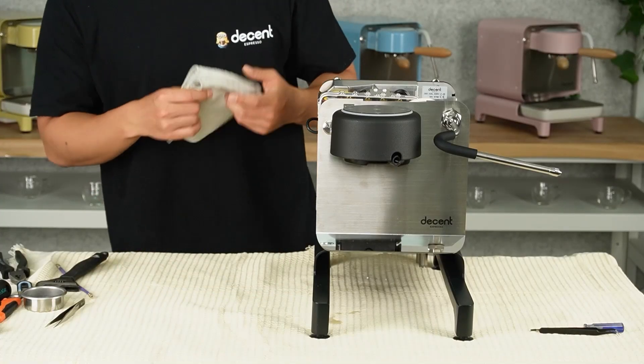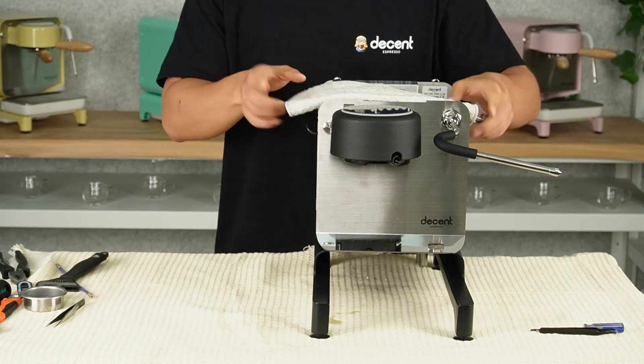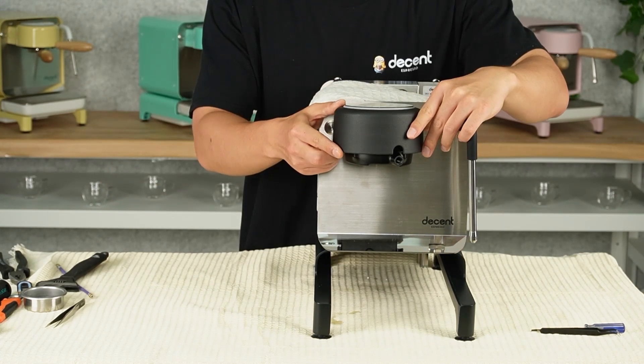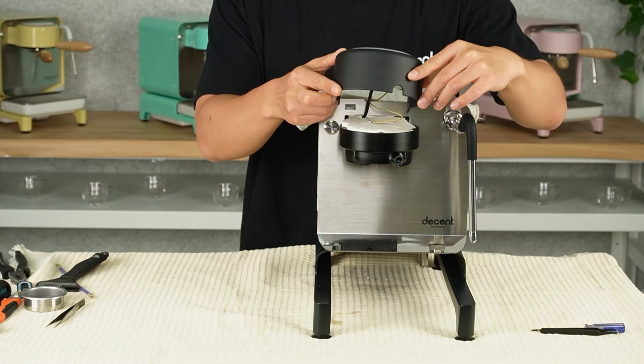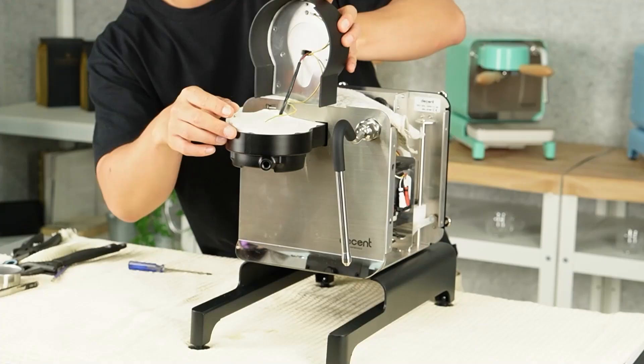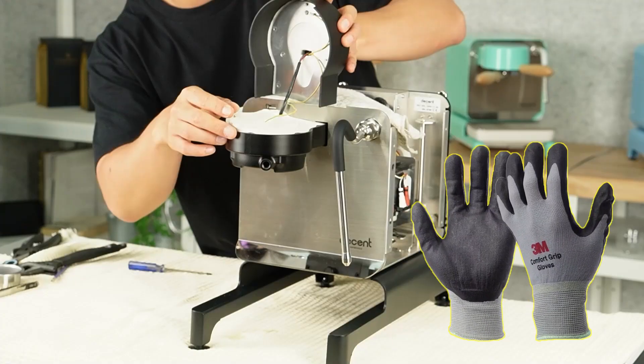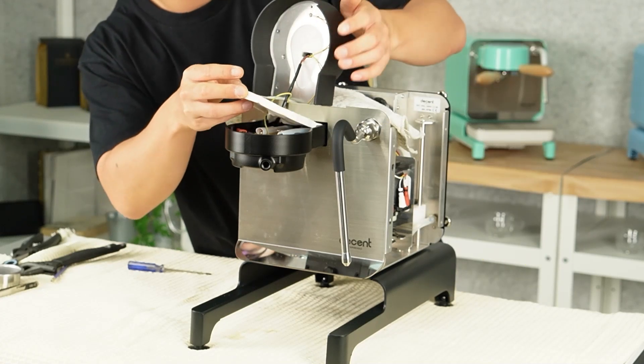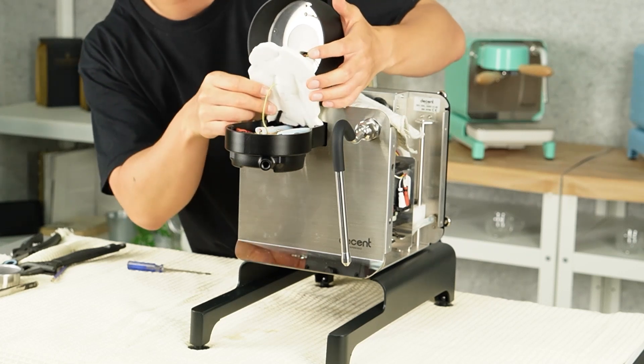Place a cloth on the top of the manifold to rest the group head cover and GHC during the procedure. Lift the group head cover carefully to avoid damaging the cables underneath. We highly recommend wearing comfort grip gloves to protect your hands when touching the glass fiber insulation sheets. Lift the bottom insulation plate to access the group head interior.